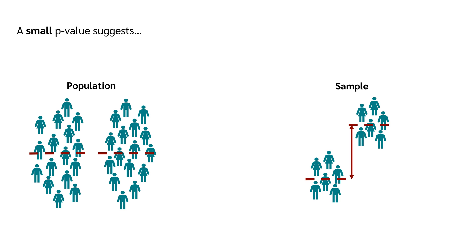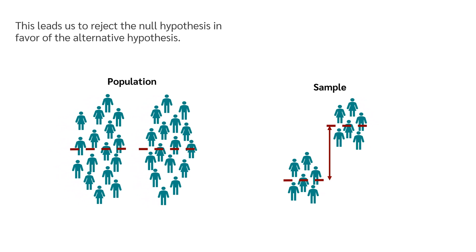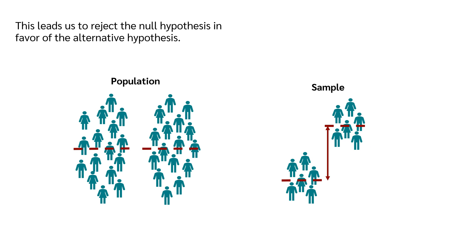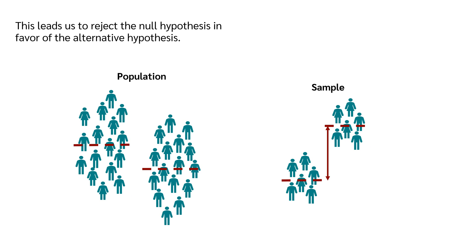Therefore, a small p-value suggests that the observed data, our sample, is inconsistent with the null hypothesis. This leads us to reject the null hypothesis in favor of the alternative hypothesis.